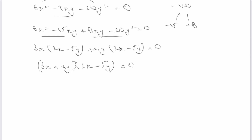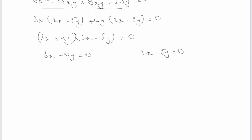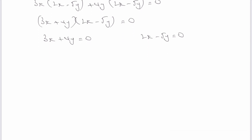So I've got two values: when 3x plus 4y equals zero, and when 2x minus 5y equals zero. I could rewrite the first as 3x equals negative 4y, and the second as 2x equals positive 5y. Switching around the coefficients gives the ratios x to y as minus 4 to 3, and also 5 to 2.